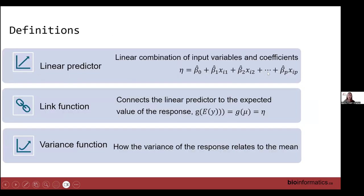To get into some definitions for generalized linear models: we have our linear predictor, which is beta-naught plus beta-1 x1 plus beta-2 x2, sometimes referred to as eta. It's just a linear combination of input variables and coefficients.